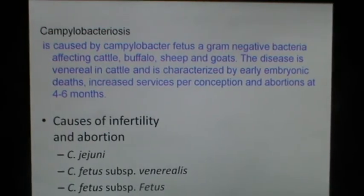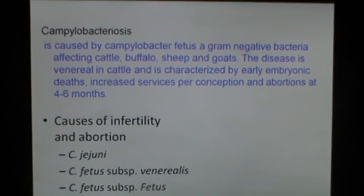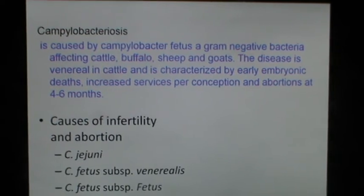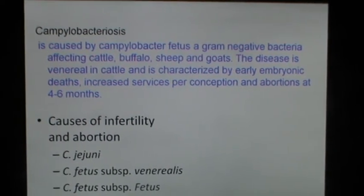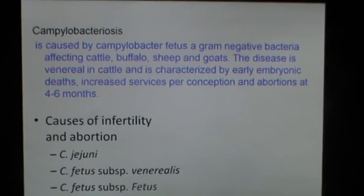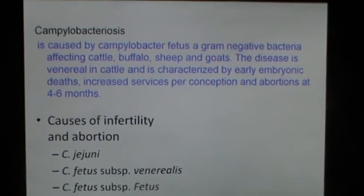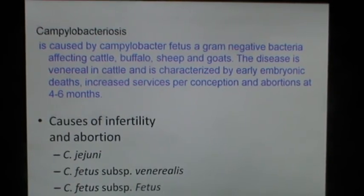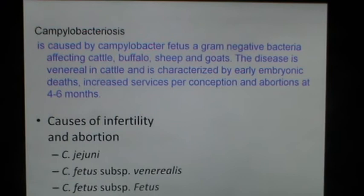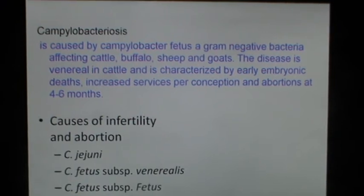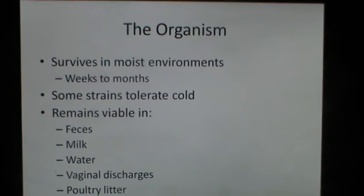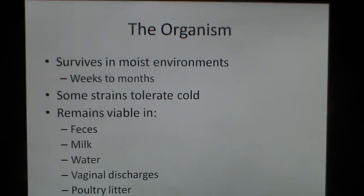Campylobacteriosis is caused by Campylobacter fetus, a gram-negative bacteria affecting cattle, buffalo, sheep and goats. The disease is venereal in cattle and is characterized by early embryonic deaths, increased services per conception, and abortions at four to six months. The causes of infertility and abortions include Campylobacter fetus subspecies venerealis or subspecies fetus.